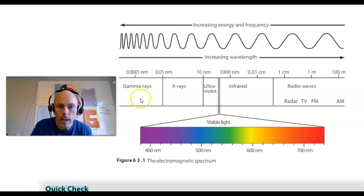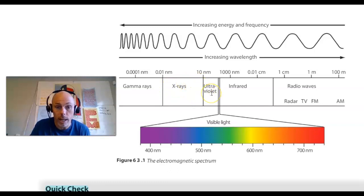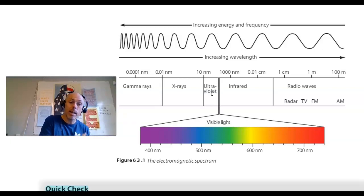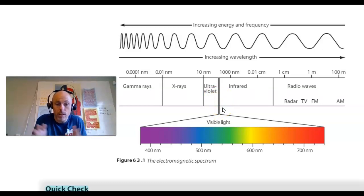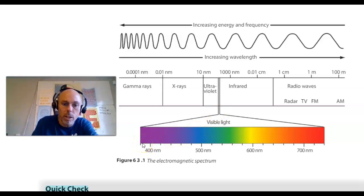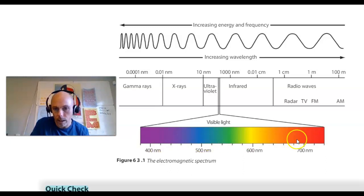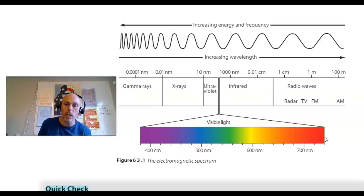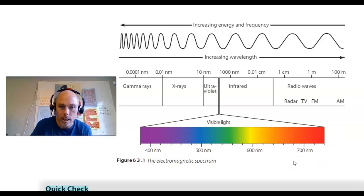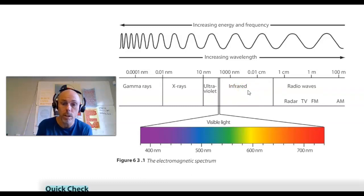Slightly lower in energy than gamma rays are X-rays, which we'll talk about later. Lower in energy than X-rays is ultraviolet — literally meaning higher than violet — the type of light with slightly more energy than visible violet light. In the middle of the spectrum we see visible light, comprising a relatively narrow band of the overall spectrum. The color of visible light with the most energy is violet, and as we move along the visible spectrum we get to red light, which has the lowest energy, lowest frequency, or longest wavelength.